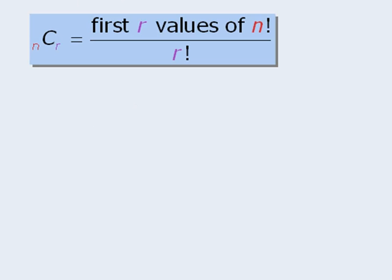Let's try one more. How about 7 choose 3? So here the r value is 3, so the numerator will be the first three values of 7 factorial, and the denominator will be 3 factorial.